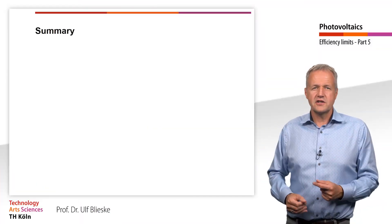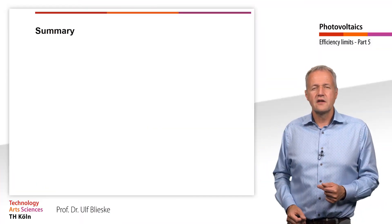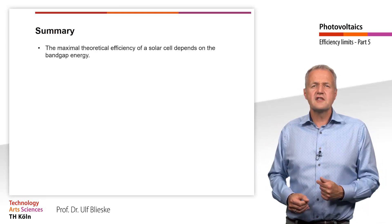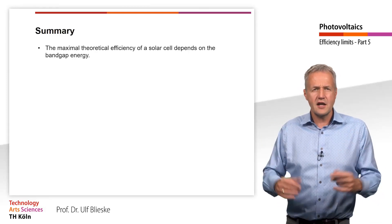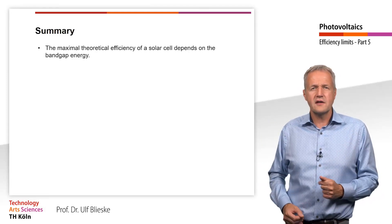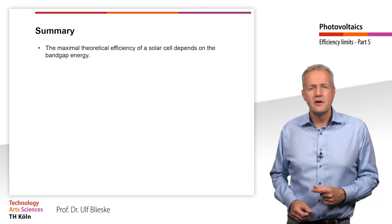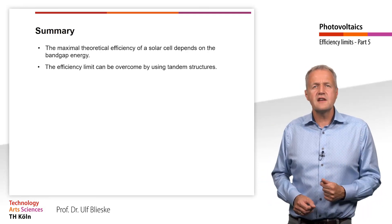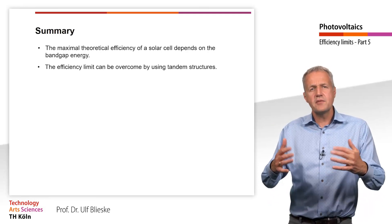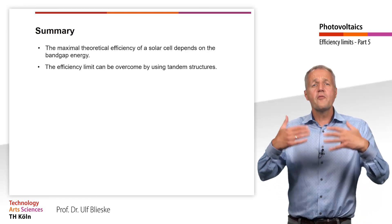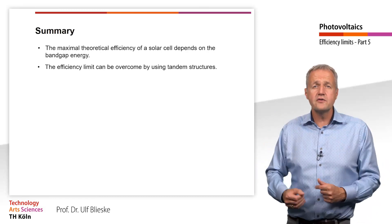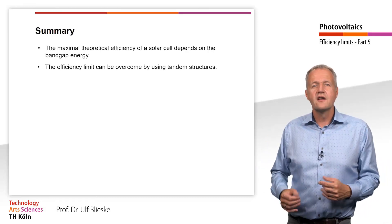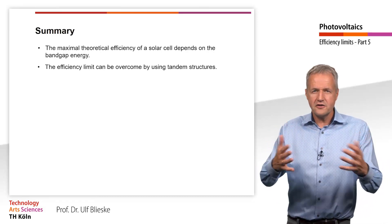To summarize this teaching unit: there is a theoretical efficiency maximum that depends on the band gap of the solar cell material. Furthermore, we have seen that the efficiency limitation can be circumvented by using, for example, multiple solar cells. Thank you for your attention.